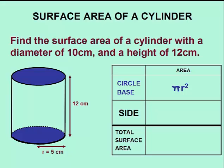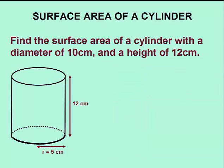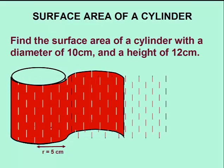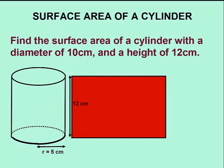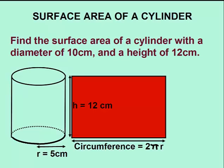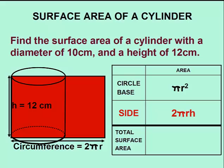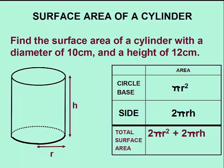The base of the cylinder is a circle, and the area of a circle is pi r squared. The side of the cylinder takes a little more work to figure out. First, we have to unravel it from the cylinder and then stretch it out to produce a rectangle. The width of this rectangle would be the same as the height of the cylinder, or 12 centimeters, and the length of the rectangle would be the same as the circumference of the circle, which is 2 pi r. We can now calculate the side of the cylinder by multiplying the length and width of this rectangle: 2 pi r times h. The surface area of the cylinder becomes 2 pi r squared, representing the two circles, plus 2 pi r h, representing the side of the cylinder.